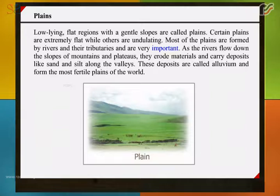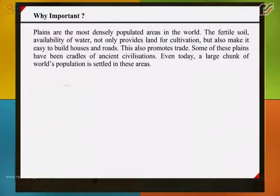Low-lying, flat regions with gentle slopes are called plains. Certain plains are extremely flat while others are undulating. Most plains are formed by rivers and their tributaries. As rivers flow down the slopes of mountains and plateaus, they erode materials and carry deposits like sand and silt along the valley. These deposits are called alluvium and form the most fertile plains of the world. Plains are the most densely populated areas in the world.